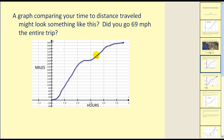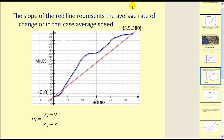Then again, you enter the freeway, your rate of speed increases, and then as you get closer and closer to L.A., maybe you hit traffic and you turn off the freeway, you slow down and reach your destination. If I was to construct a line between the starting point and the ending point, that would be a secant line. The slope of the red line represents the average rate of change, or in this case, the average speed.